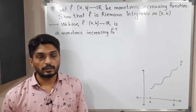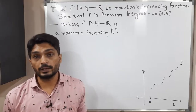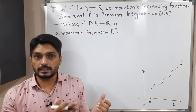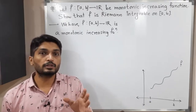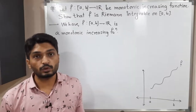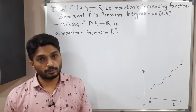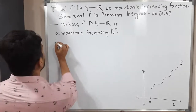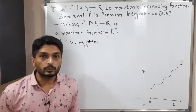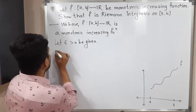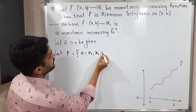We have to prove the function is Riemann integrable. There are two ways: either show the upper integral equals the lower integral, or use the method studied in the previous video — for every epsilon there exists a partition P such that upper sum minus lower sum is less than epsilon. We are going to use this second technique. So let epsilon greater than zero be given. After that, I will find a partition of the closed interval [a, b]. Let P = {a = x₀, x₁, x₂, ..., xₙ = b} be a partition of [a, b].